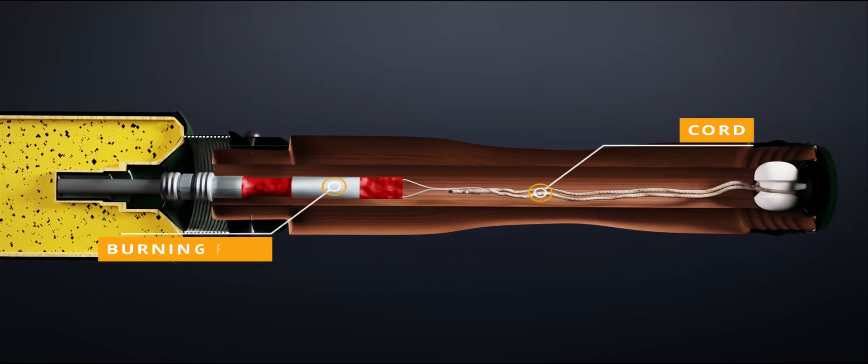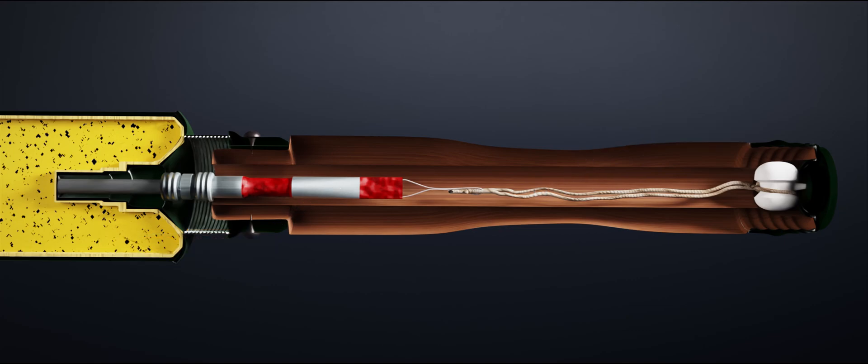Inside the handle a burning fuse and the cord is placed. One end of the cord is connected to a porcelain round shaped ball and the other end to the burning fuse. The porcelain ball is connected to the lower metal cap.